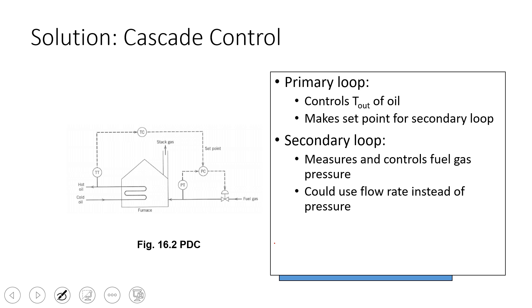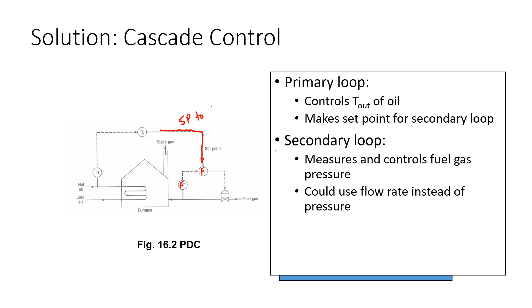One solution is cascade control for this. If we want to measure pressure right here — this could also be a flow controller. For example, if I just change this to an FT and an FC, install a flow transmitter and flow meter there, and then have a flow controller, that might be more common than a pressure one. The primary loop consists of the temperature out of the oil, and this makes a set point for the secondary loop. The secondary loop measures and controls the fuel gas pressure. This is going to be a set point to the secondary.